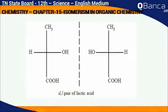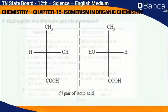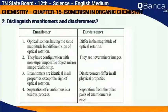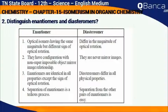D, L pair of lactic acid is an example of optical isomerism. Distinguish enantiomers and diastereomers — Enantiomers: Optical isomers having the same magnitude but different sign of optical rotation. Diastereomers: Differ in the magnitude of optical rotation.